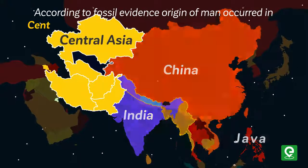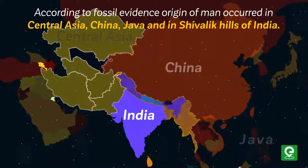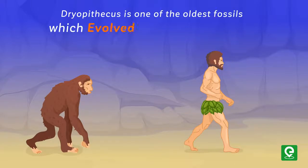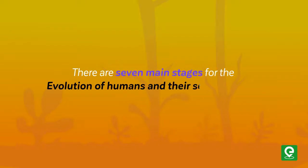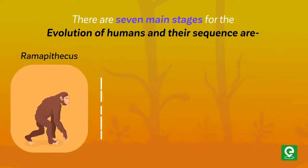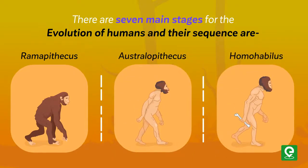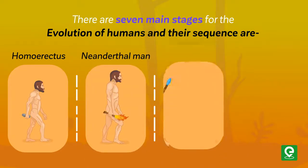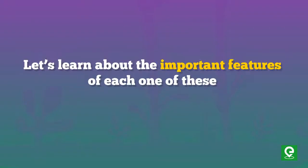The origin of man occurred in Central Asia, China, Java, and in the Shivalik Hills of India. Dryopithecus is one of the oldest fossils, which evolved into apes and men. There are seven main stages for the evolution of humans: Ramapithecus, Australopithecus, Homo habilis, Homo erectus, Neanderthal man, Cro-Magnon, and modern man.